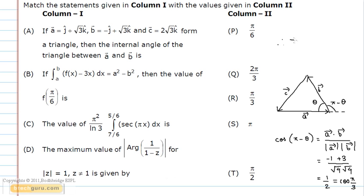Therefore, π - θ = π/3, which implies θ = 2π/3, which is option Q.